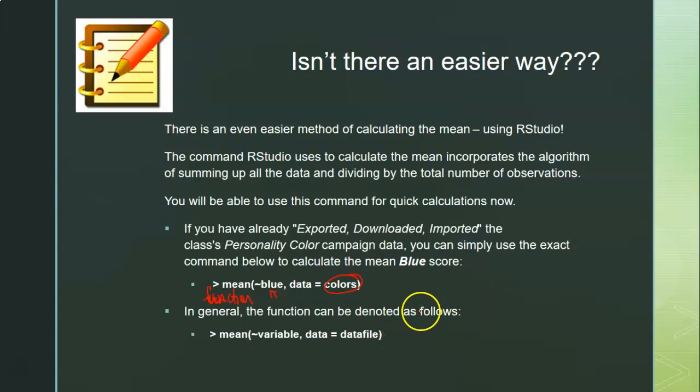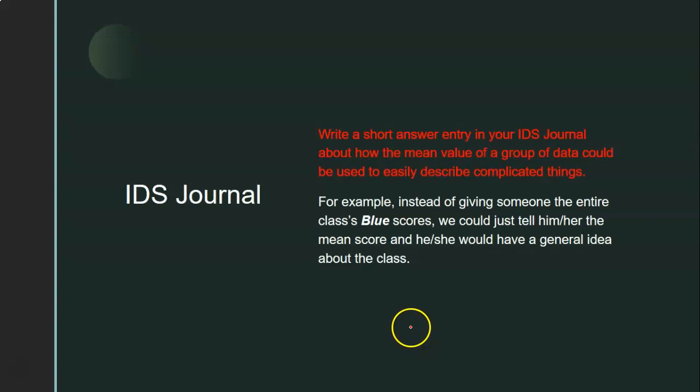Try this out for our class's own data and even try it for the other three colors — green, orange, and gold. In your IDS journal, write a short entry about how the mean value of a group of data could be used to easily describe complicated things. For example, instead of giving someone all 25 blue scores, you could just tell them the mean score of 11.72, and they'd have a general idea that scores were somewhat in the middle — not too low, not too high.